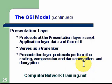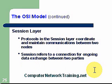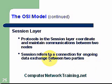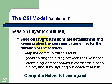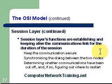The session layer, the third layer down: protocols in the session layer coordinate and maintain communications between two nodes — they establish the connection, maintain it, and then tear it down. Sessions refer to the connection for ongoing data exchange between two parties. Session layer functions include establishing and keeping alive the communication link for the duration of the session, keeping the communication secure, synchronizing dialogue between the two nodes, and determining whether communications have been cut off and figuring out how and when to restart.